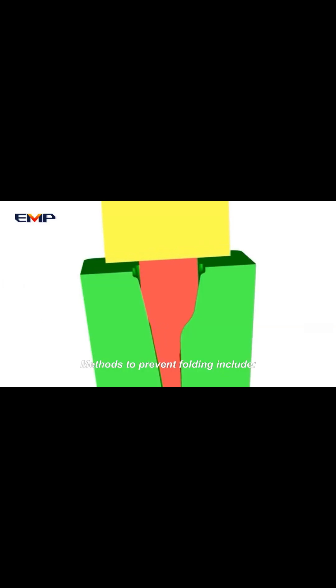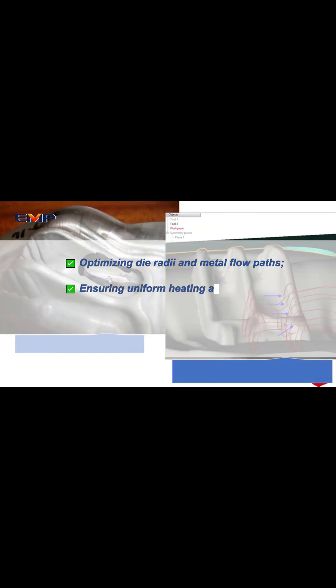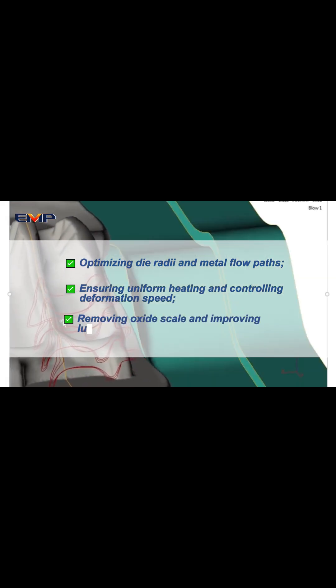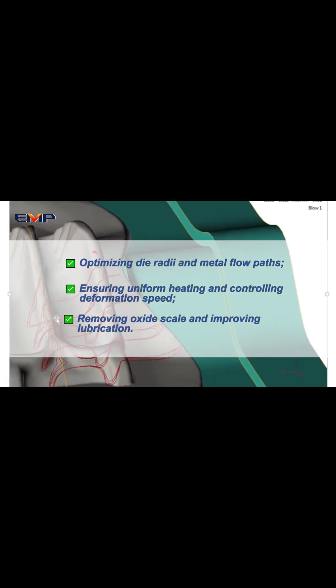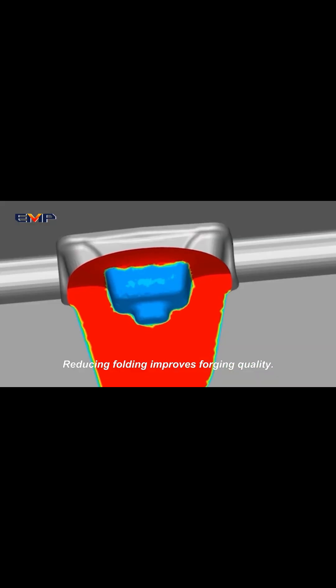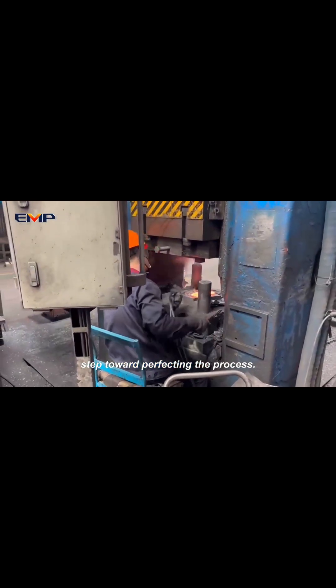Methods to prevent folding include optimizing die design and metal flow paths, ensuring uniform heating and controlling deformation speed, and removing oxide scale and improving lubrication. Reducing folding improves forging quality. Every forming operation is a step toward perfecting the process.